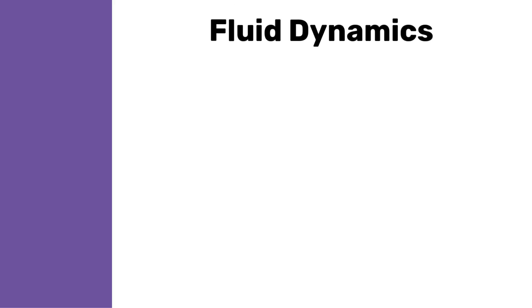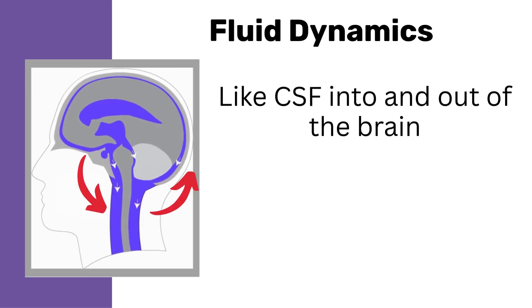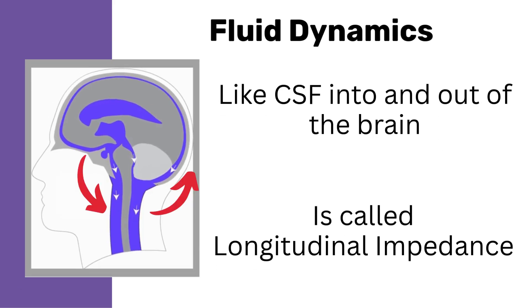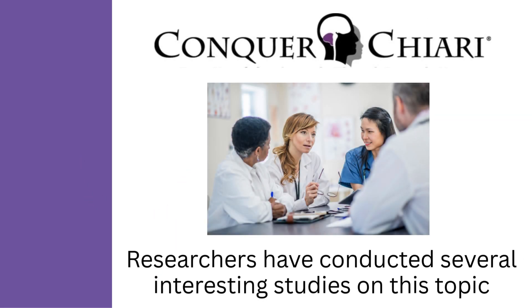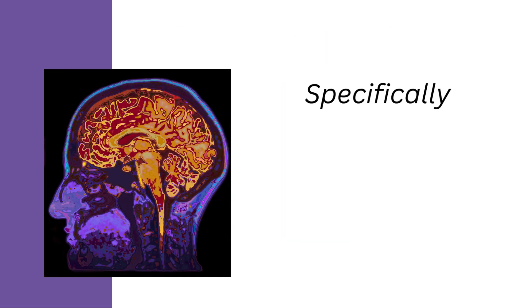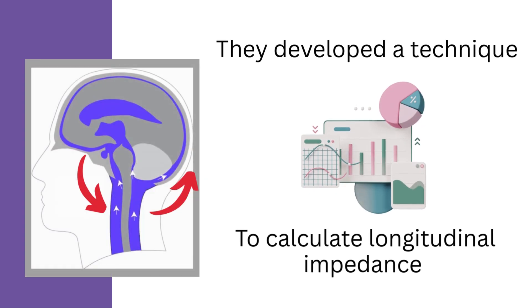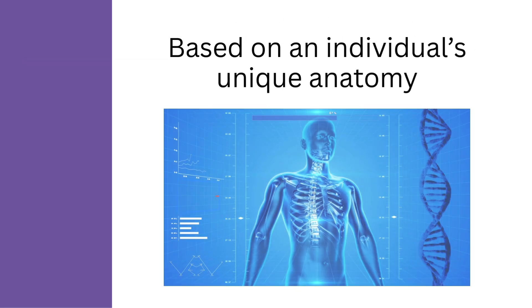In the field of fluid dynamics, resistance to the pulsatile motion of a fluid, like CSF into and out of the brain, is called longitudinal impedance, and Conquer Chiari researchers have conducted several interesting studies on this topic. Specifically, using high-resolution MRI imaging, they developed a technique to calculate longitudinal impedance based on an individual's unique anatomy.